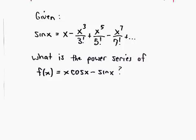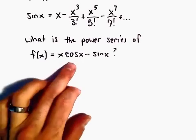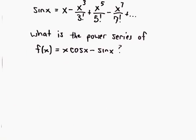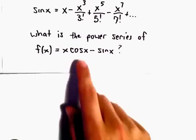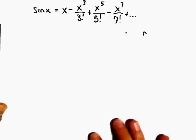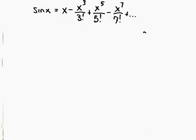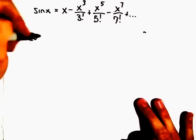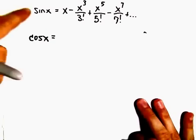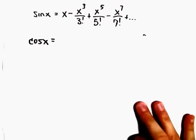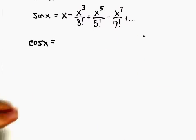We're going to find a power series representation for the function x times cosine x minus sine x. The first thing I'm going to do is find a power series representation for cosine x. We know that if we take the derivative of sine x, we get cosine x, so I'm just going to take the derivative of the right side.